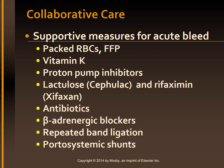Supportive measures for acute bleeding include administration of PRBCs, FFP (fresh frozen plasma), vitamin K (AquaMEPHYTON), proton pump inhibitors such as Protonix, lactulose, and rifaximin to prevent hepatic encephalopathy from breakdown of blood and release of ammonia in the intestines, and antibiotics to prevent bacterial infection. Because of the high incidence of recurrent bleeding, continued therapy is necessary. Long-term management includes beta blockers, repeated band ligation of varices, and portosystemic shunts or TIPS in patients who develop recurrent bleeding.